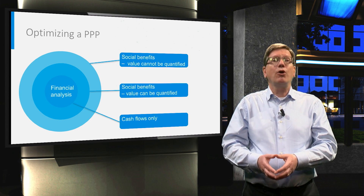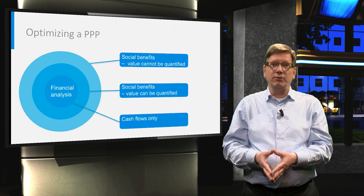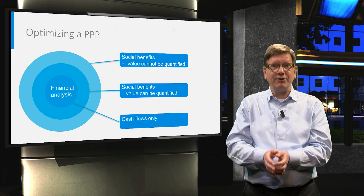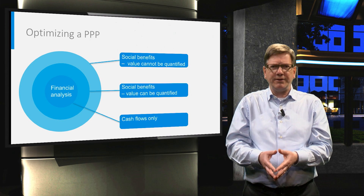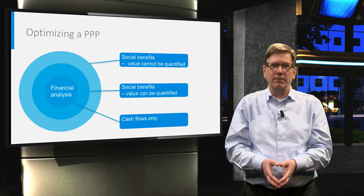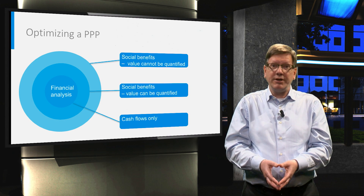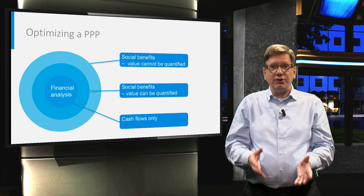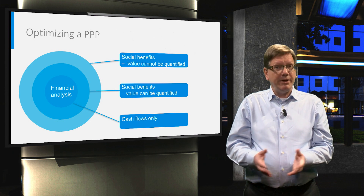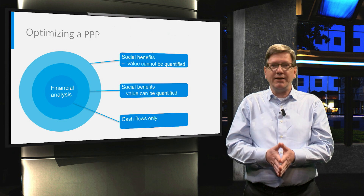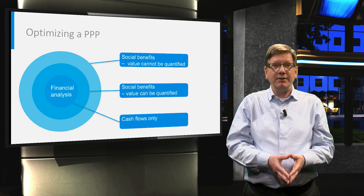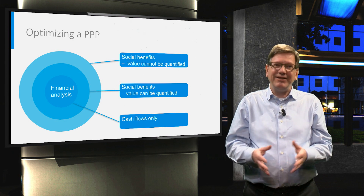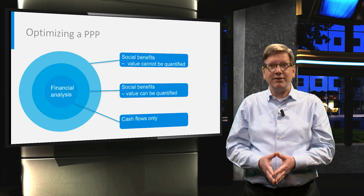Governments will focus on all benefits, including those in the outer circles, while private parties tend to look predominantly at the inner circle — the one that contains the actual project cash flows. If we want to make a project attractive for both public and private stakeholders, we need to offer each what they need: acceptable cash flows for private parties and maximum social and environmental benefits for public parties. This is exactly what the concession agreement is designed to do.